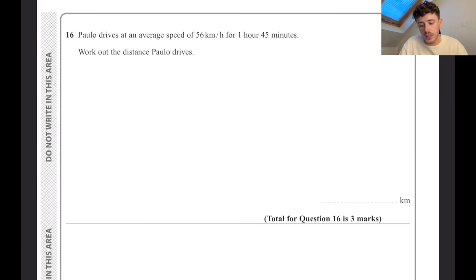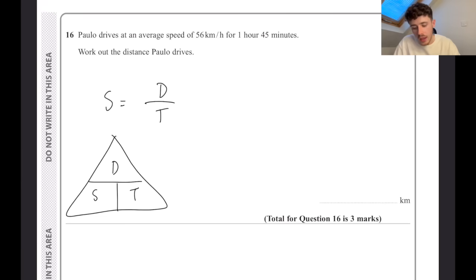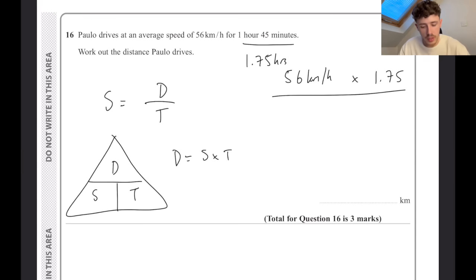Polo drives at an average speed of 56 kilometers an hour for one hour and 45 minutes. What is the distance? We know the equation speed equals distance over time. We can turn that into a triangle. If we want distance, that's going to be speed times time. 56 kilometers per hour multiplied by - to keep this simple, convert this into just hours. That is going to be 1.75 hours because 45 minutes is three quarters of an hour. If we multiply that in our calculator, that gives us 98 kilometers.